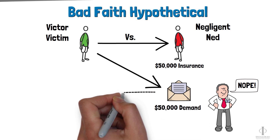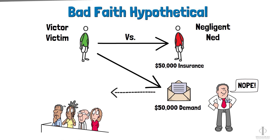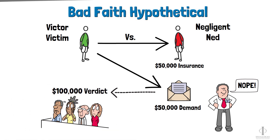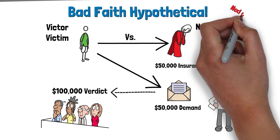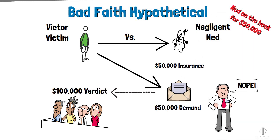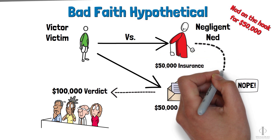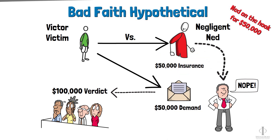After that, let's say the case goes to trial and the jury awards Victor a verdict over the policy limits — let's say they award him $100,000. Now, Ned could be personally responsible for the amount of the judgment that exceeded the policy limits, which is $50,000. In this situation, Ned could potentially sue his own insurance company for acting in bad faith by not protecting him from this financial risk when they had the opportunity to settle the case with Victor within policy limits.